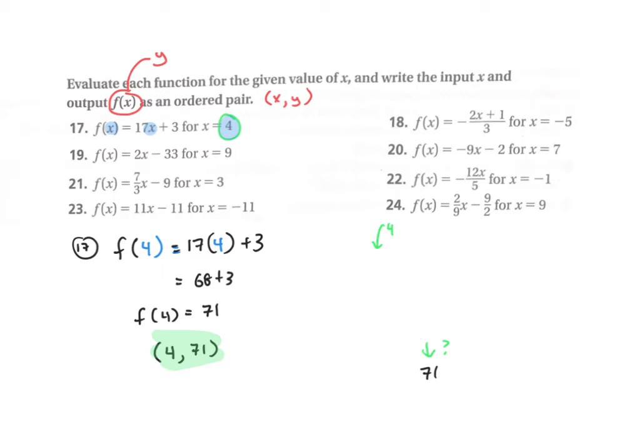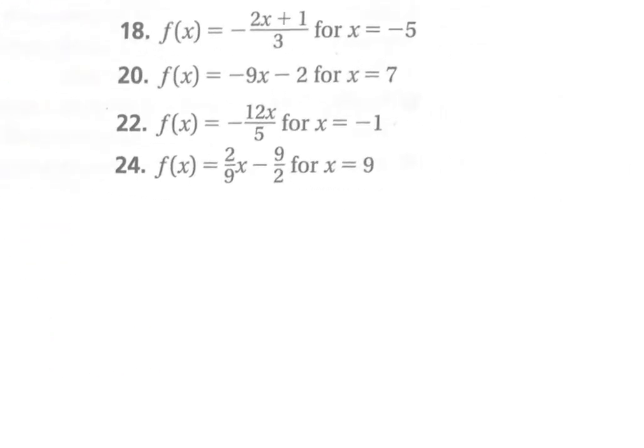Let's do another problem, maybe one of the more complicated looking ones. Let's attack number 24. For this one, I am going to insert the 9 into the function there and there. So f of 9 is equal to 2 ninths.